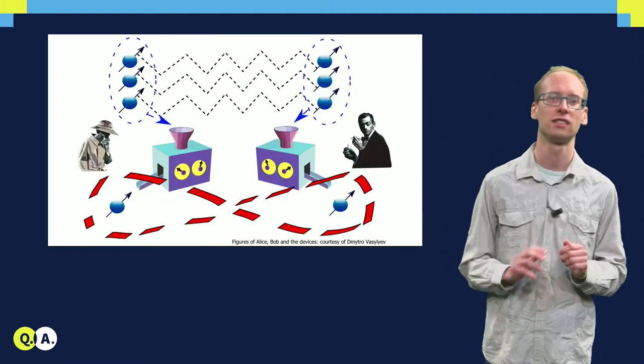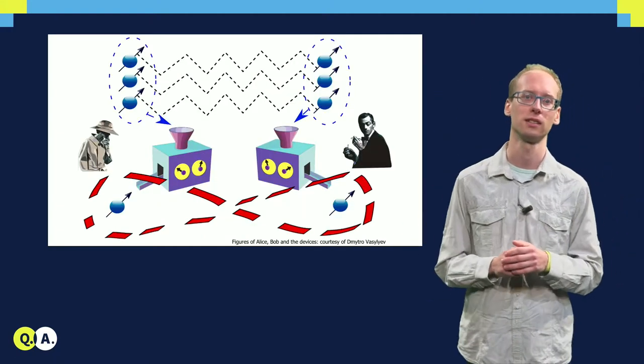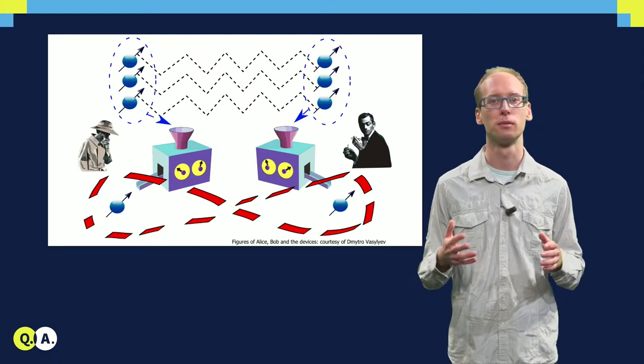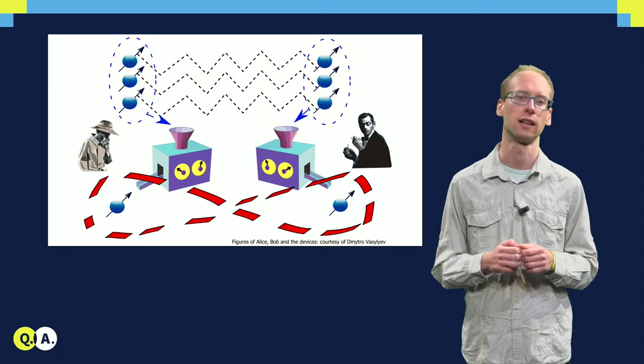Bob then decided to apply such a distillation procedure also to entanglement. In entanglement distillation, Alice and Bob will use multiple copies of weakly entangled states.